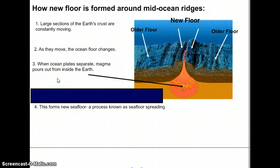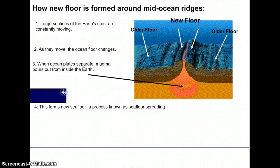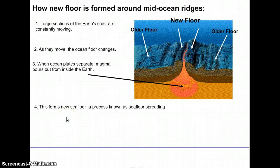When ocean plates separate, magma pours out from inside the earth. This forms a new sea floor, a process known as sea floor spreading. Pause the movie, label those steps one through four.